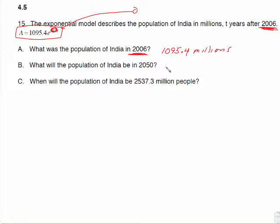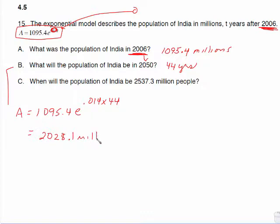Now it wants to know what would the population be in the year 2050? Well, from 2006 up to 2050 is 44 years. So this is just a straight calculator problem. 1,095.4 times e to the 0.014 times 44. So that works out to be 2,028.1 million. So it is just a straight stuff it in the calculator kind of problem.